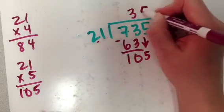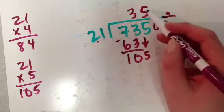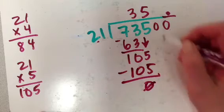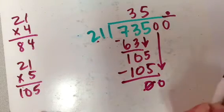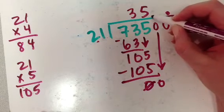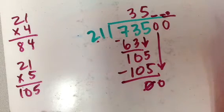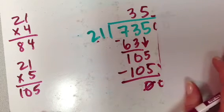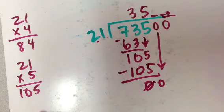Okay, so 5 times 21 is 105. I have 0 left. I'm going to drop down the 0. Can 21 go into 0? Because again, remember I still have these two spots up here that I have to fill in before my decimal point. So my answer feels like it should be 35, but it's not actually going to be 35.